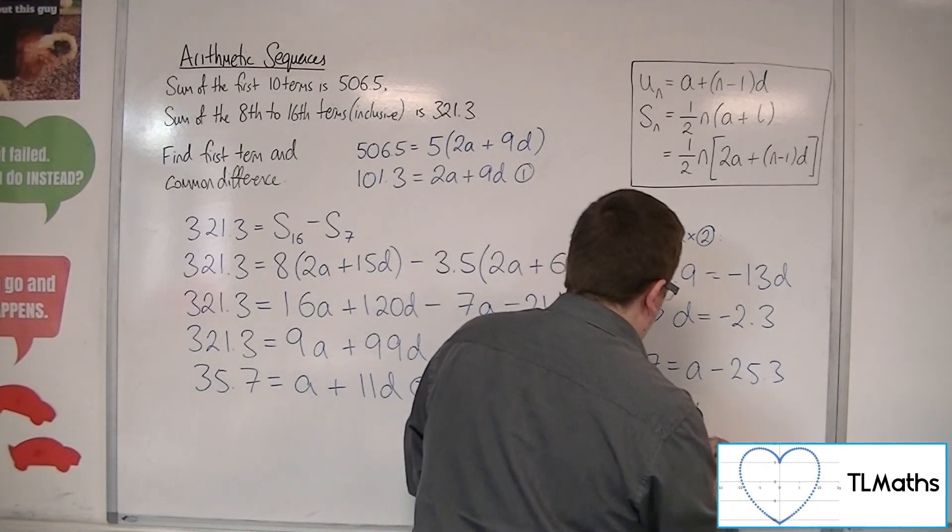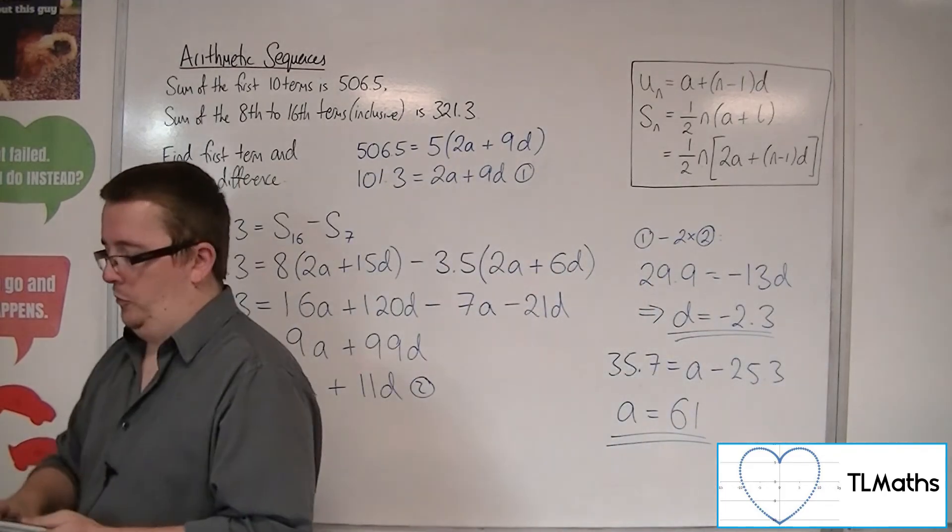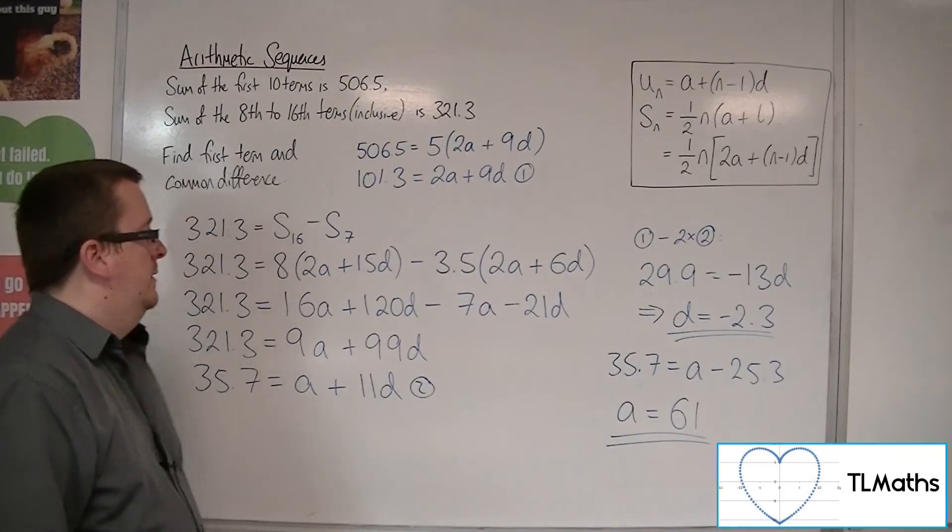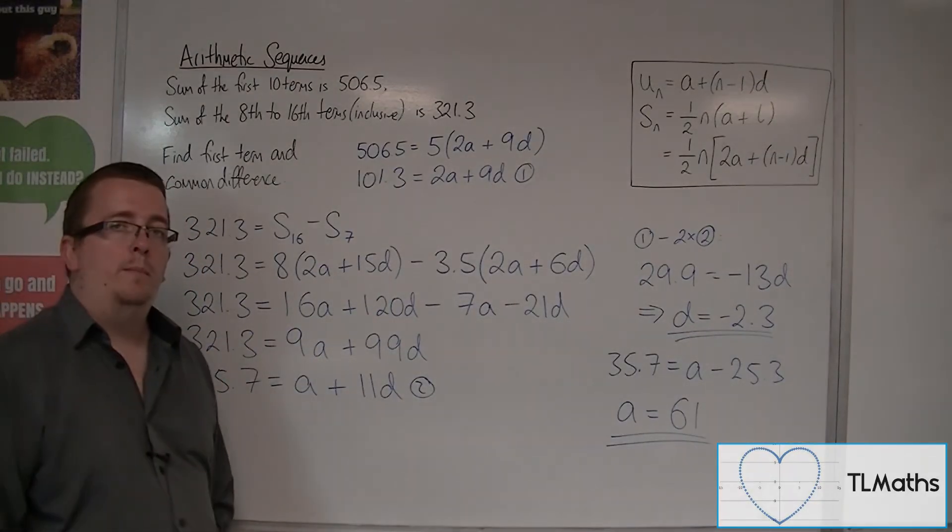So a is 61, and d is minus 2.3. And that is quite a complicated example of solving this type of problem.